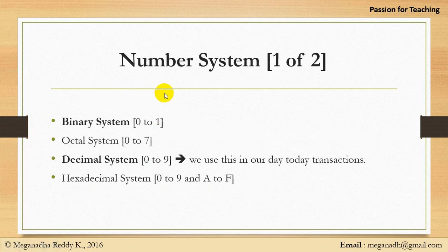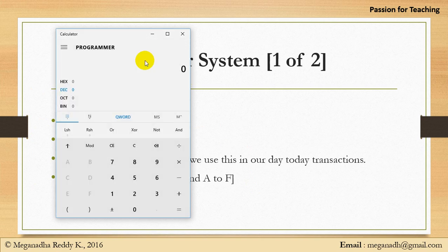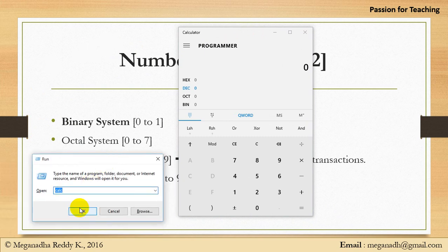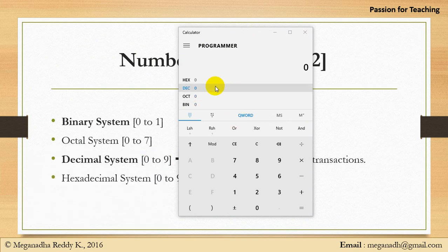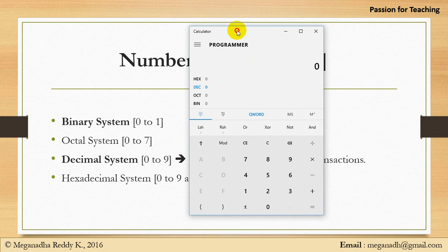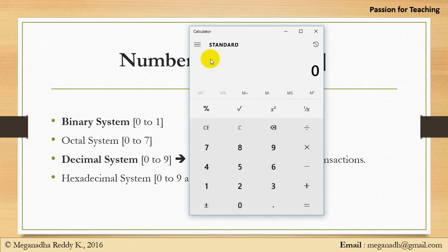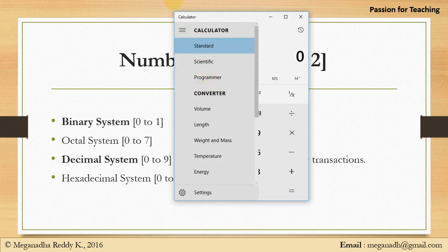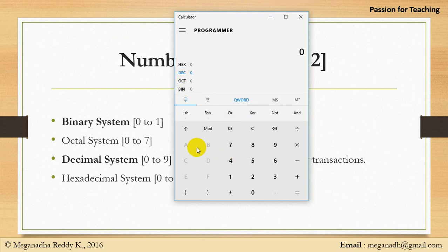To demonstrate this, I'm opening the calculator using the Run command. By default this is a programmer calculator on Windows 10, so it may look slightly different on Windows 7 or 8. I'll switch from standard to programmer mode. Now you can see A, B, C, D, E, F are disabled, and the number systems — hexadecimal, decimal, octal, and binary — are clearly shown.